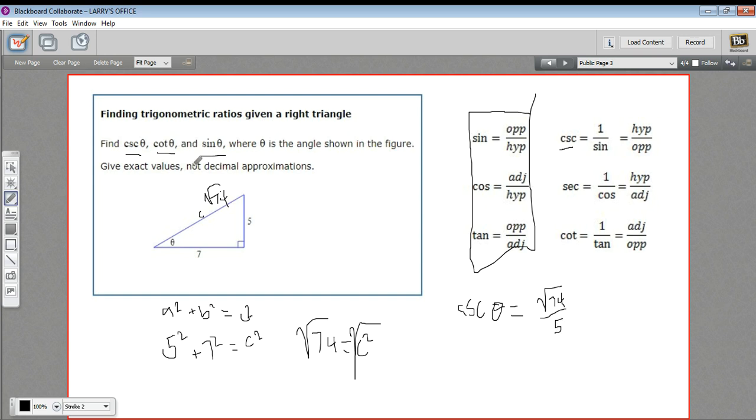All right, let's try the cotangent. So the cotangent of theta is the adjacent over the opposite. The adjacent side of the angle theta is 7, and the opposite is 5.